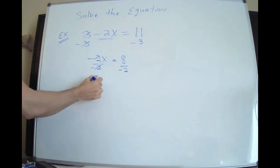Negative 2 over negative 2 is 1. You don't write the 1. 8 divided by negative 2 is negative 4.